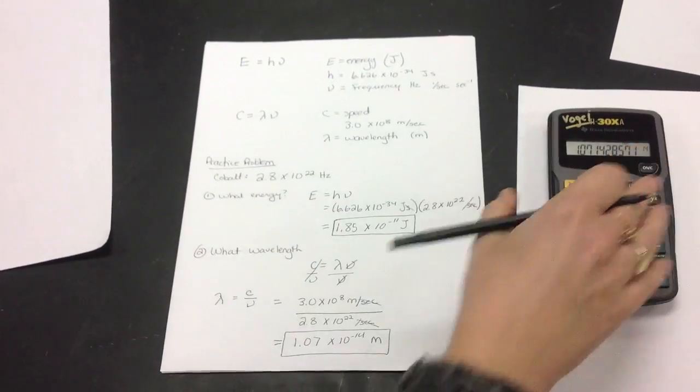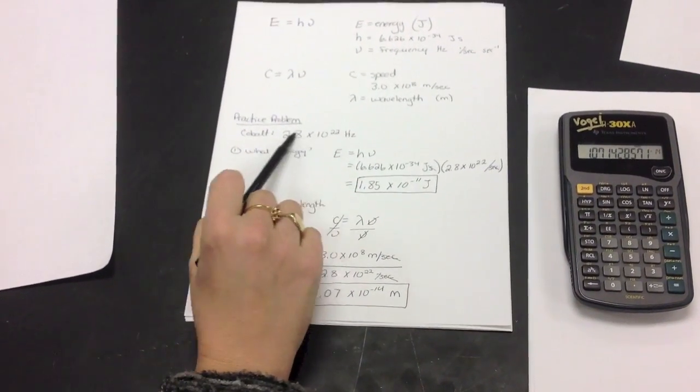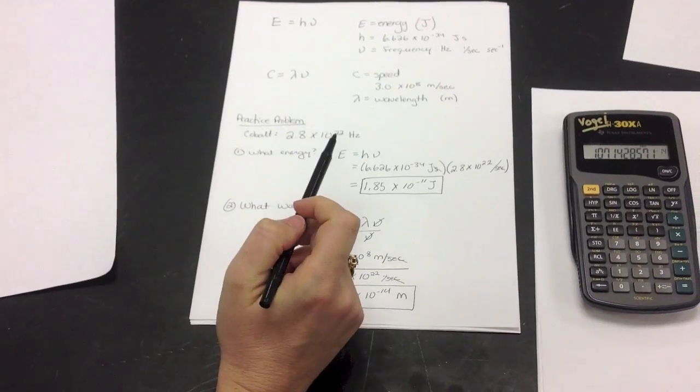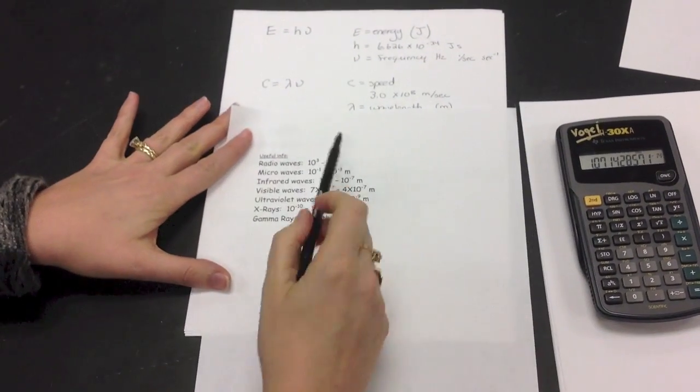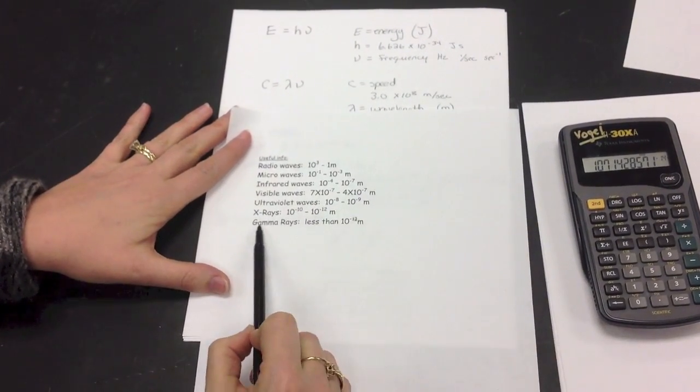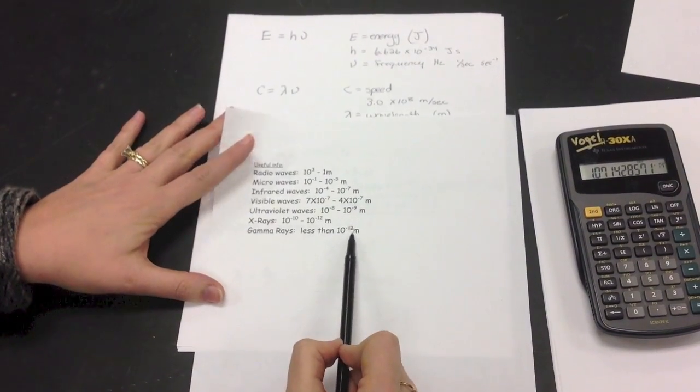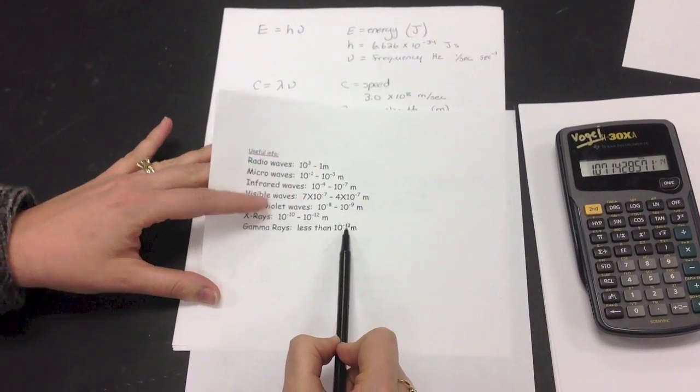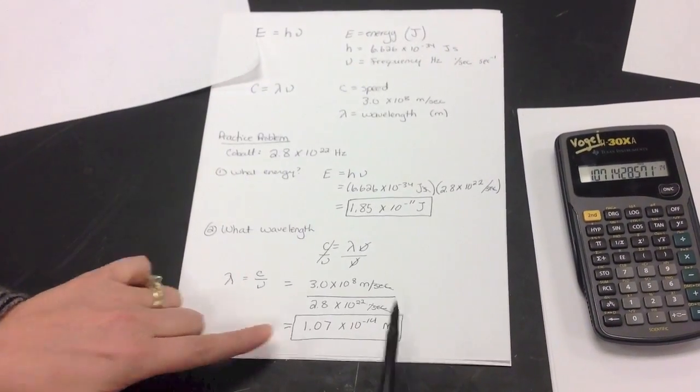Now, I want to show you something. If I asked you at this point, what type of wave is this, what type of energy is this, you could go to a chart such as this, which comes right from the thing, and you can see that gamma rays have wavelengths of less than 10 to the negative 12 meters, so therefore this must be a gamma ray.